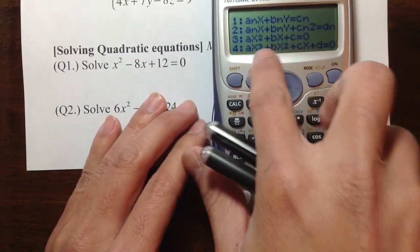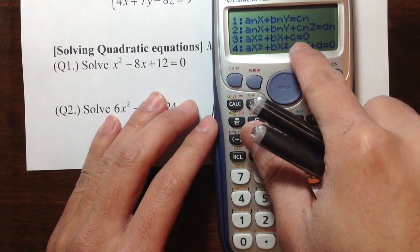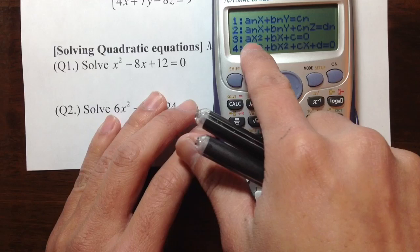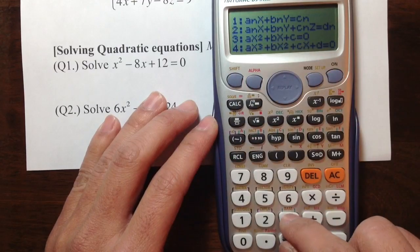Look at this - we have x², x, and no x equals a number. The standard form of the quadratic equation, that's option number 3. Press 3.